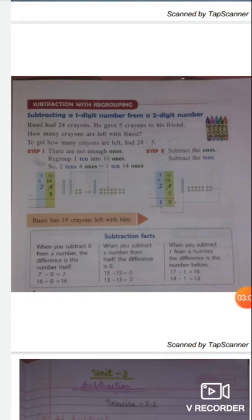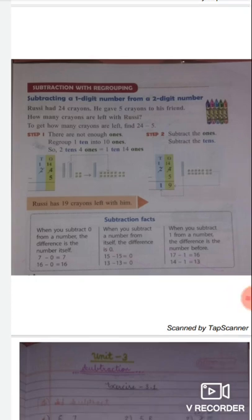Now students, let's come to the first topic from this chapter: subtraction with regrouping. Students, you know very well, subtraction is to take away. Here we are going to discuss how to subtract a one-digit number from a two-digit number. Roosie had 24 crayons. He gave 5 crayons to his friend. How many crayons are left with Roosie? So here, to get how many crayons are left, we have to find 24 minus 5. We have to follow the two steps given below.